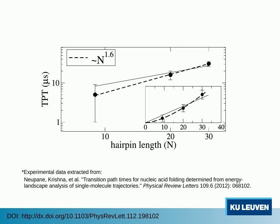There has been quite some experimental effort recently in measuring transition path times for DNA and protein folding. Interestingly, experiments on hairpin folding seem to indicate that the folding dynamics is indeed anomalous. Although experimental error bars are still large, the exponent is consistent with our computer simulations and model predictions.